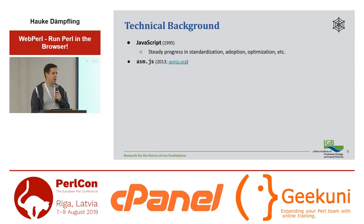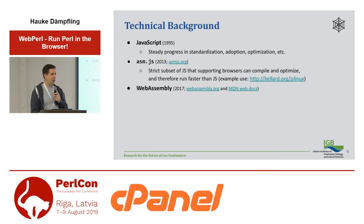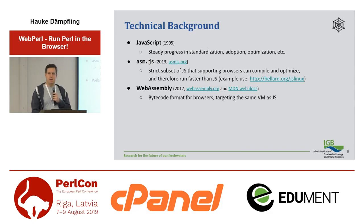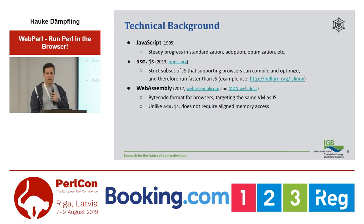The next technology is ASM.js, which is a strict subset of JavaScript. Browsers that support and recognize it are able to compile it so that it can run code much faster than regular JavaScript — you can get entire virtual machines in the browser, for example. The evolution of this technology is WebAssembly, which is a bytecode format for the same virtual machine that runs JavaScript in your browser. It's kind of its own language, but it's tightly integrated with JavaScript because it runs in the same virtual machine. It has a couple of advantages over ASM.js — for example, I tried building Perl to ASM.js at first, but the Perl core does a lot of unaligned memory access, which wasn't possible in ASM.js but was possible in WebAssembly.